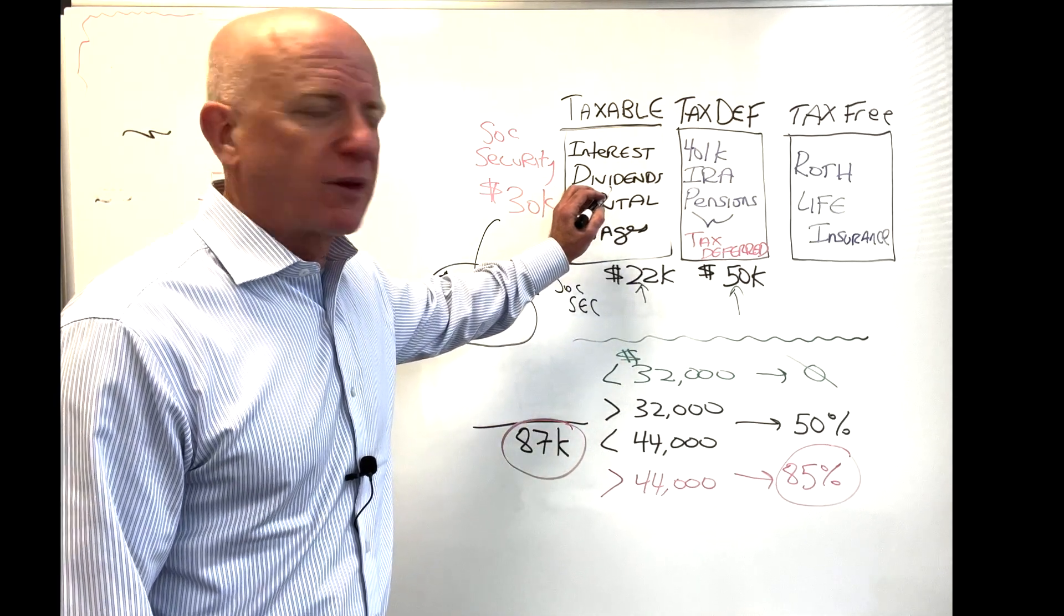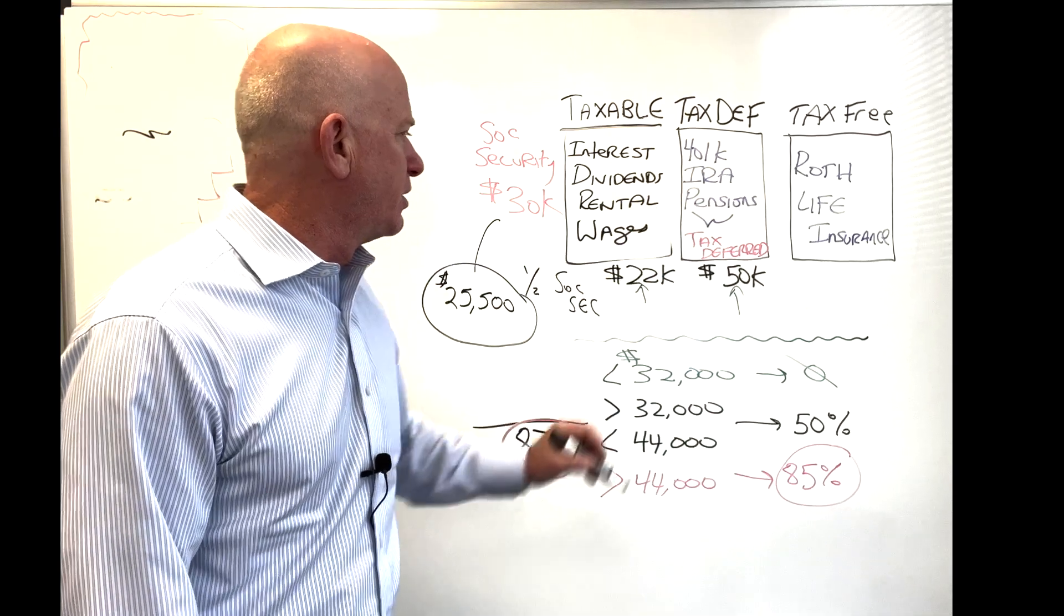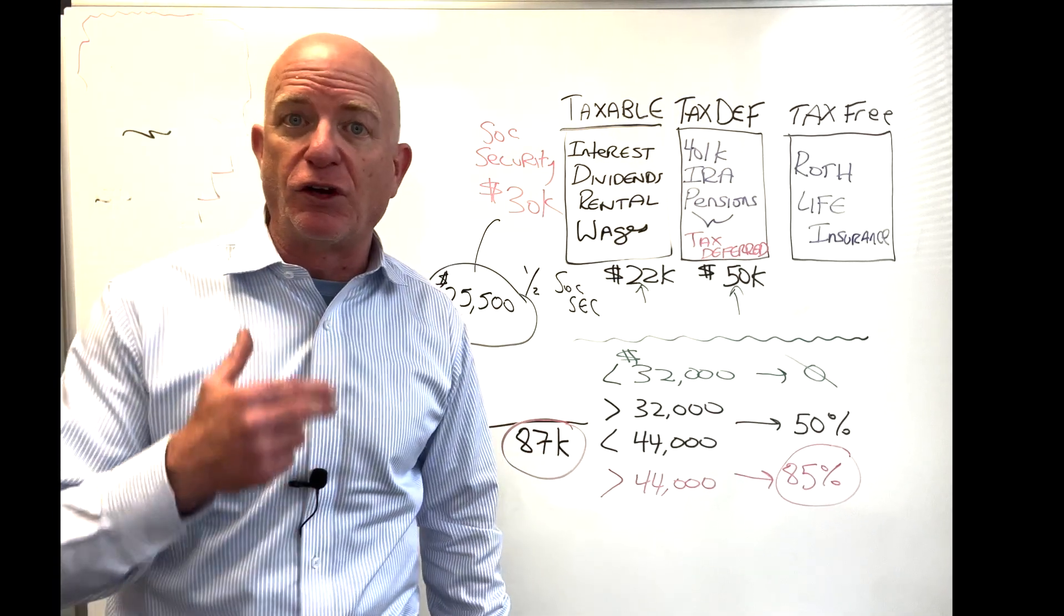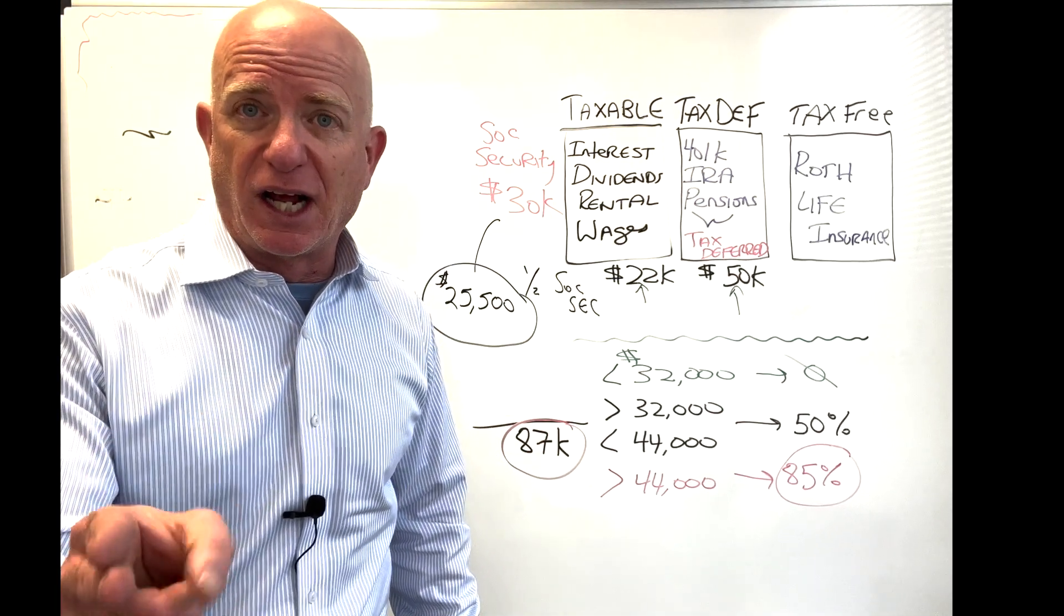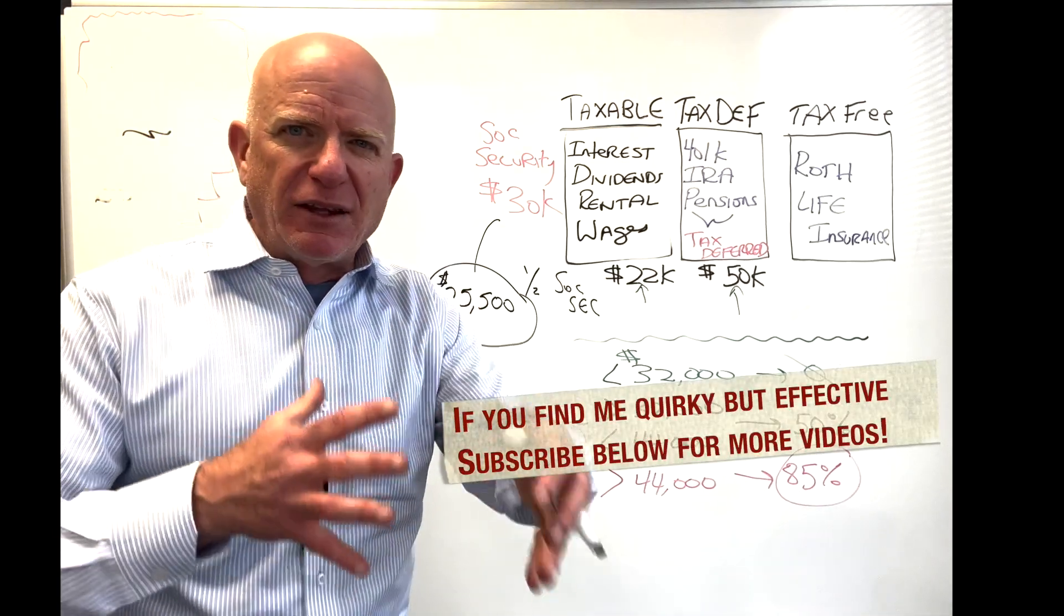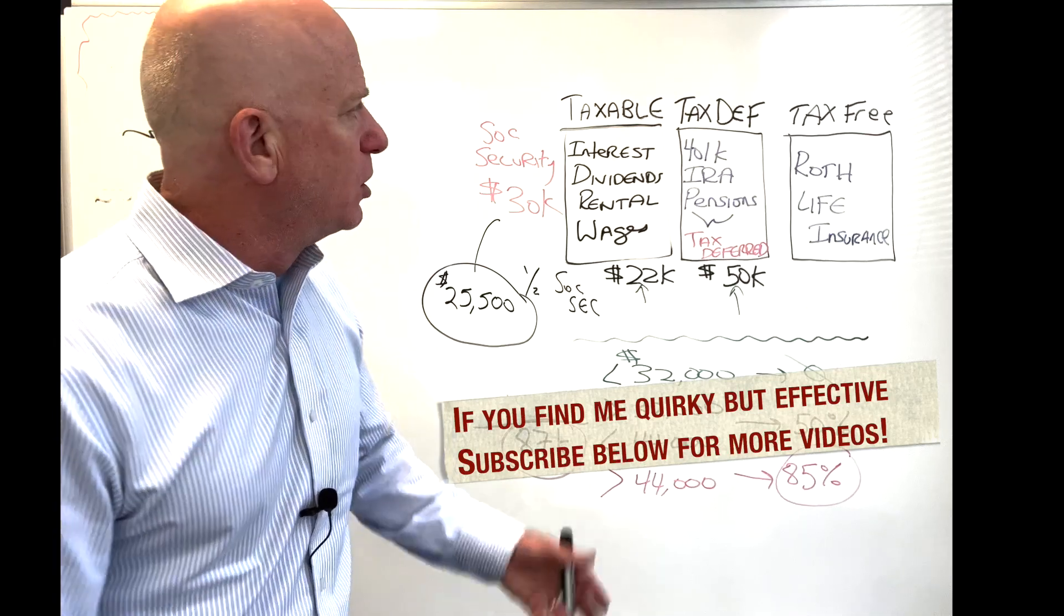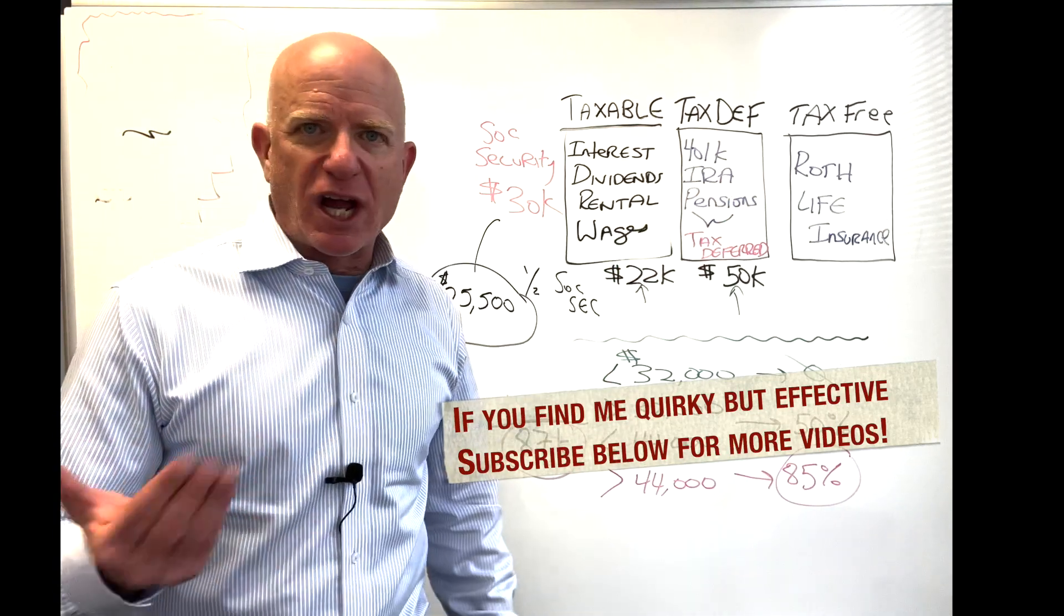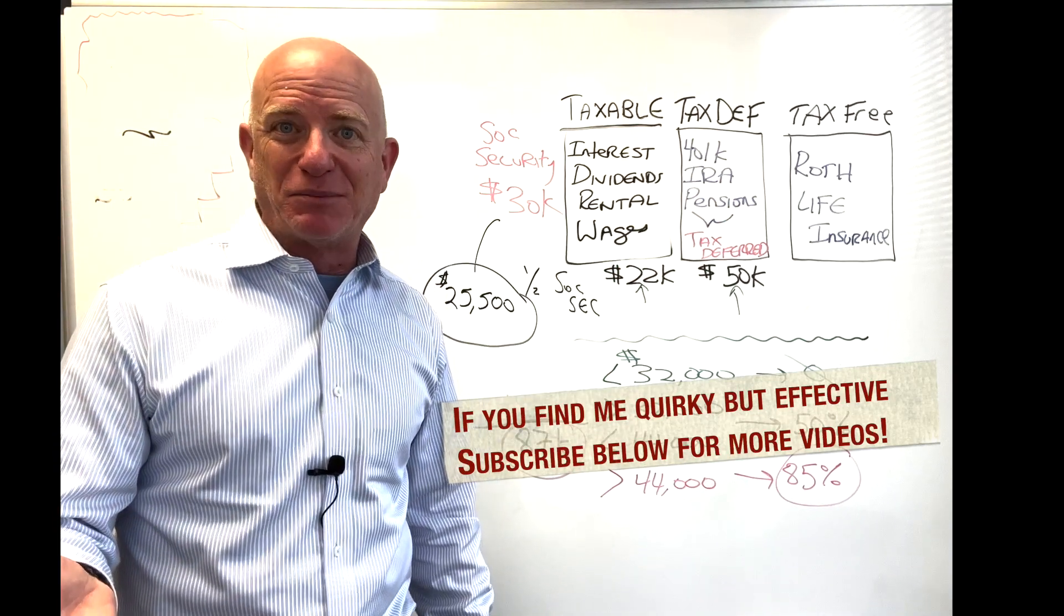Anything that comes out of here, anything that comes out of here, plus one half of your Social Security, that's your provisional income calculation. So how do we make this a little bit better? How do we lower this?